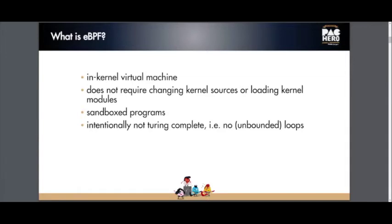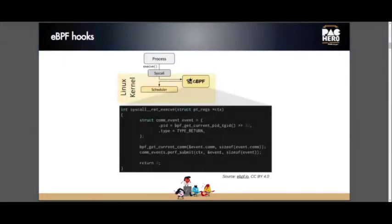eBPF programs are attached via hooks to certain points in the kernel. In this example, the eBPF program is called every time the execve syscall is invoked. It gets the current PID and the current process name that was on CPU, then submits it to a ring buffer. This picture is from ebpf.io, which is a great resource if you're new to eBPF. Every time a user-space process calls execve, it triggers the eBPF program, then continues with the Linux kernel scheduler.